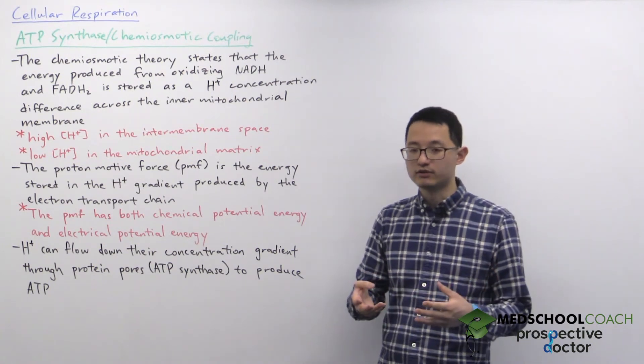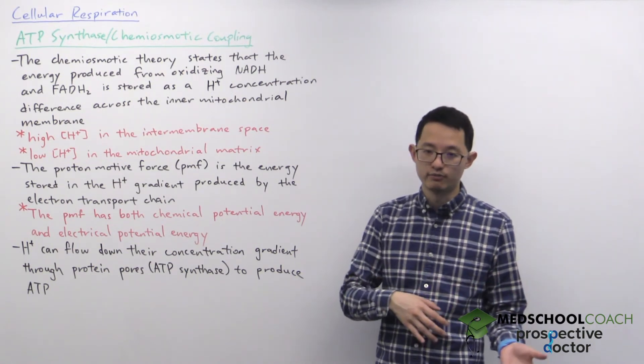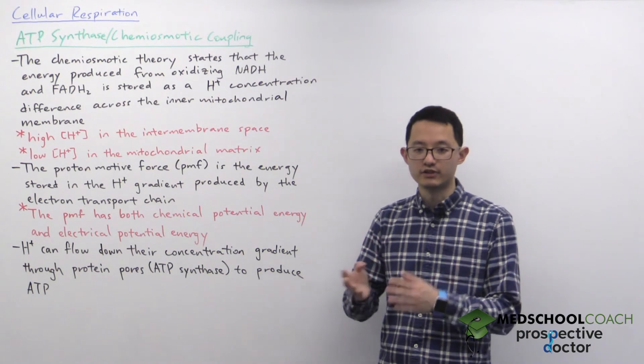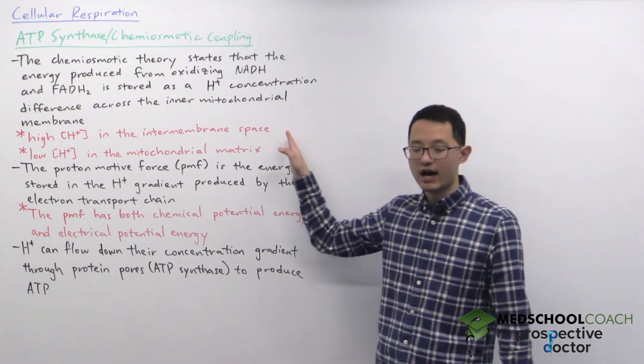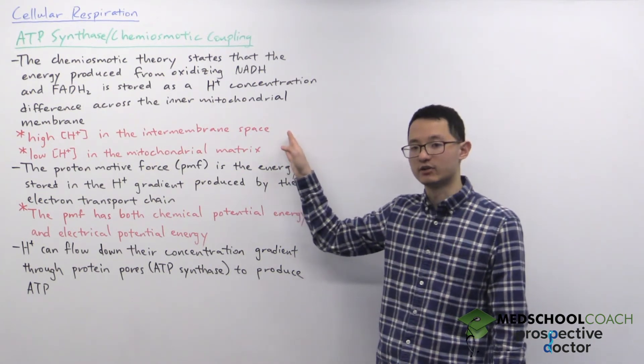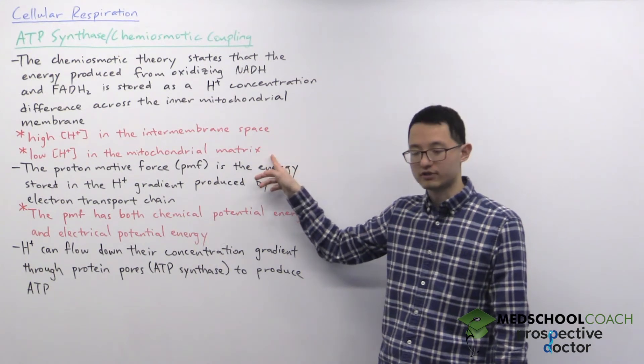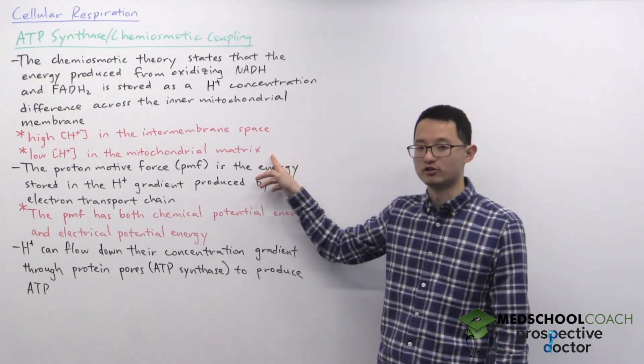And as you recall, protons are pumped from the mitochondrial matrix to the intermembrane space. So that means there's a high proton concentration in the intermembrane space and a low proton concentration in the mitochondrial matrix.